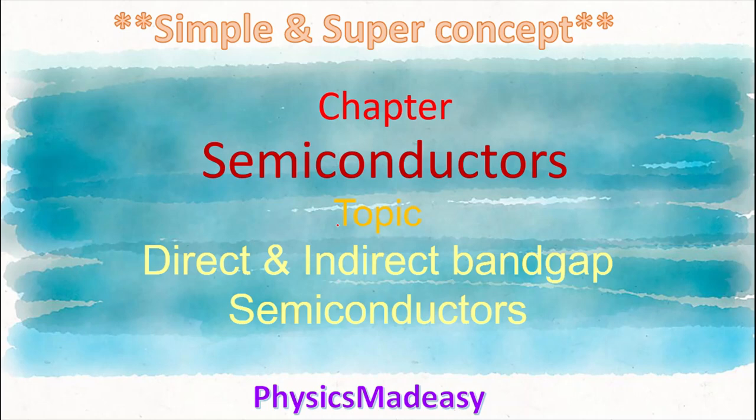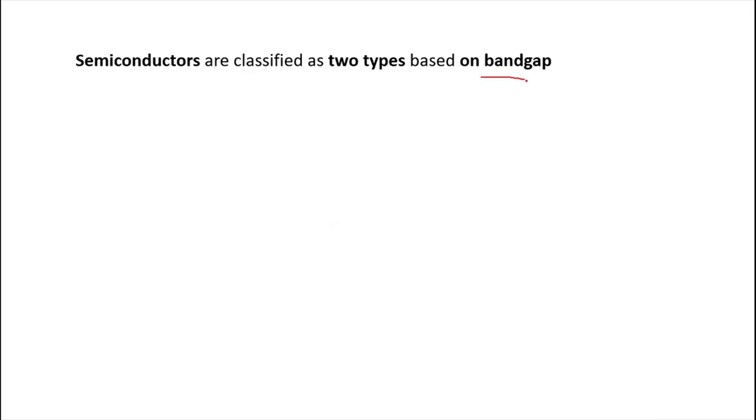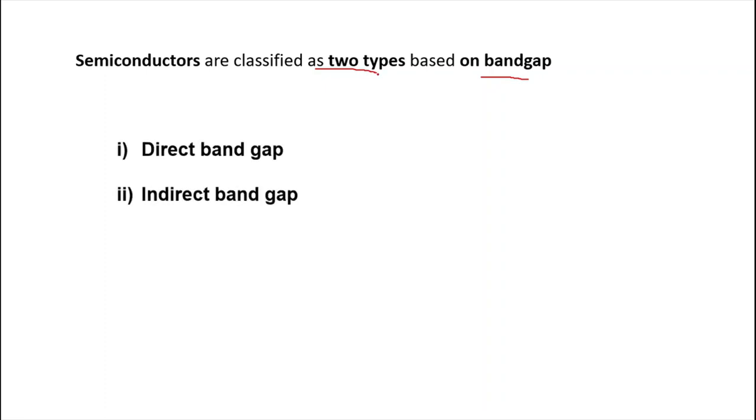Namaste dear learners. Today we are going to see a simple and super concept in semiconductors — that is direct and indirect bandgap semiconductors. Based on bandgap, semiconductors are classified into two types: direct bandgap and indirect bandgap semiconductors.